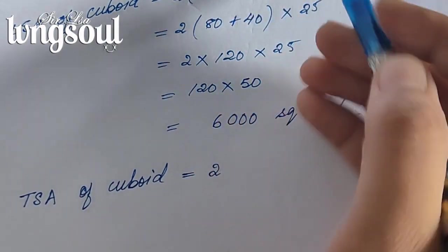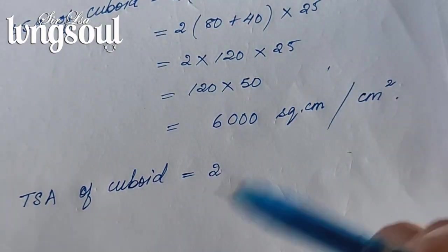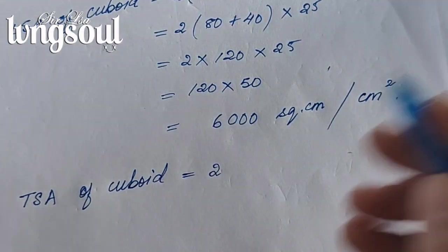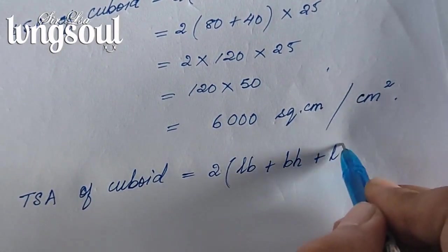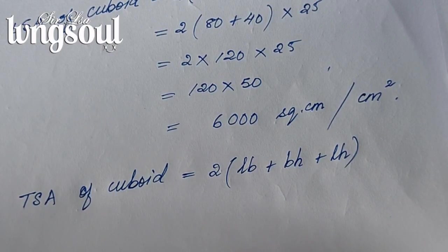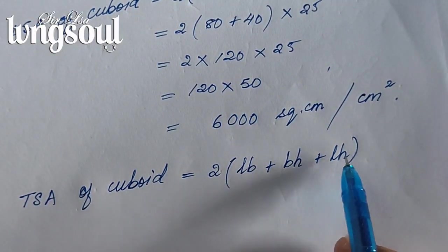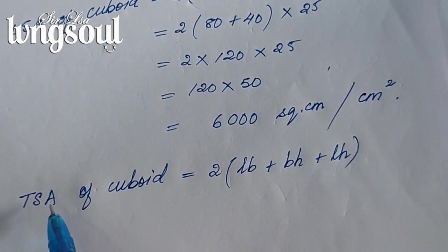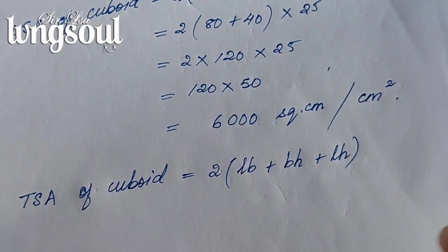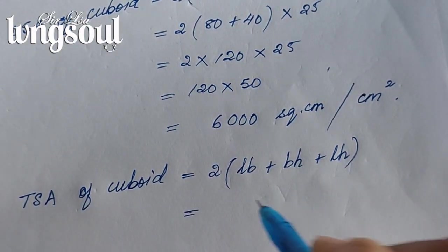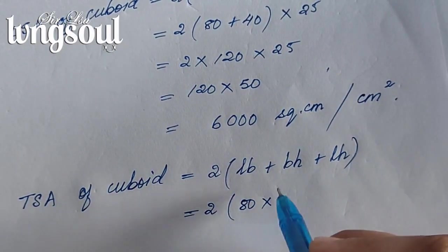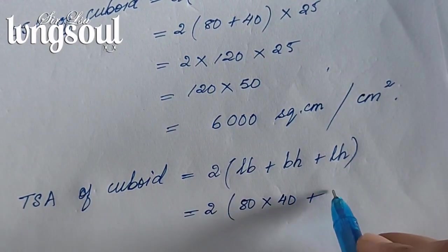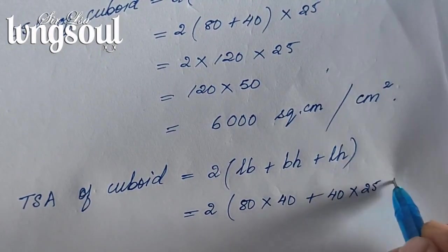The lateral surface area formula is: 2 times (length×breadth + breadth×height + length×height), where perimeter into height. Length is 80 cm, breadth is 40 cm, height is 25 cm. So: 2 times (80×40 + 40×25 + 80×25).